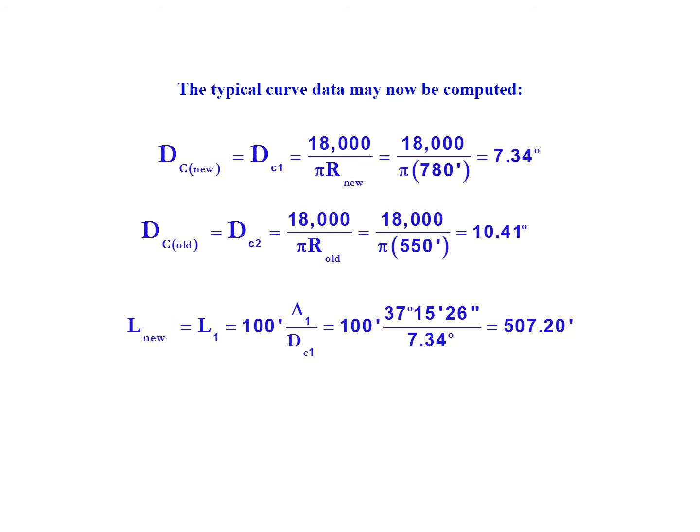We also need to find the length of each of these individual curves. So L1, the length of the new curve, is 100 multiplied by 37 degrees 15 minutes 26 seconds divided by 7.34 degrees, gives us an L1 of 507.2 feet.